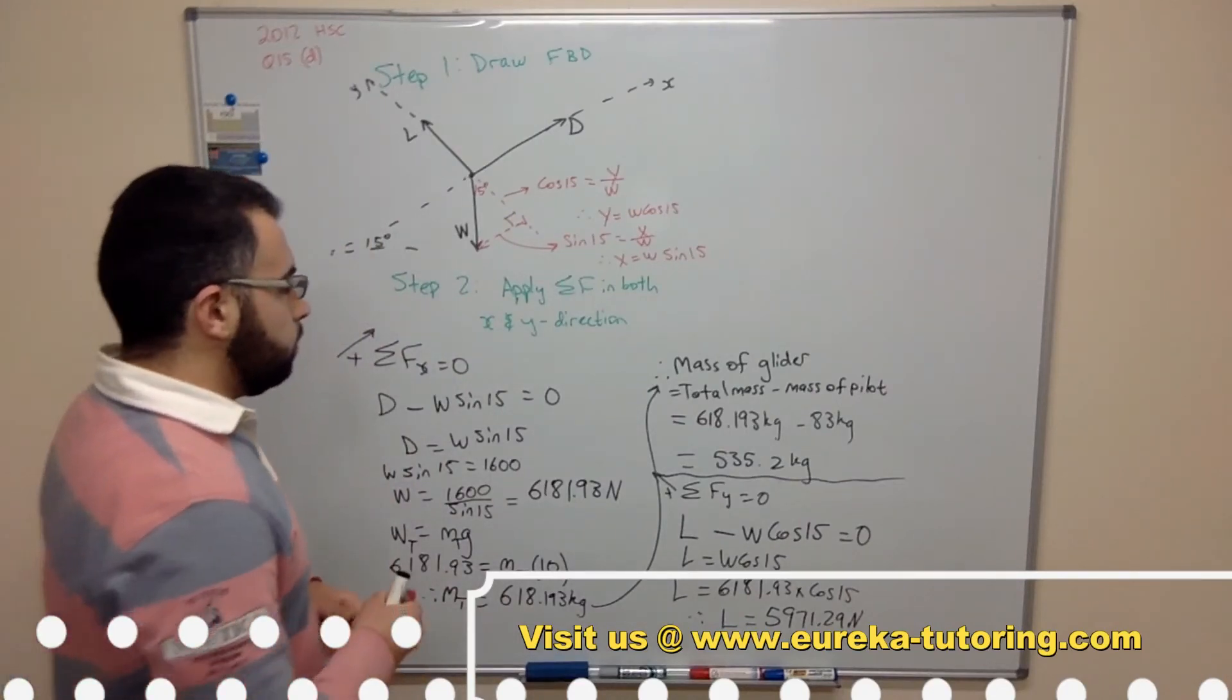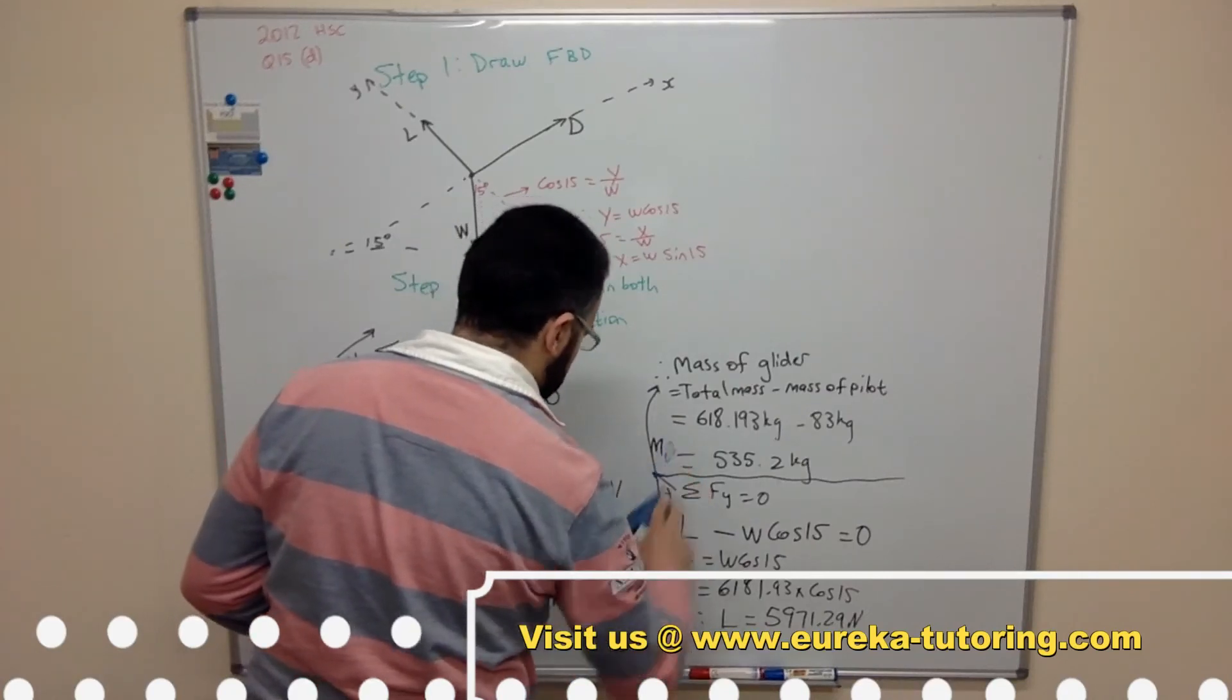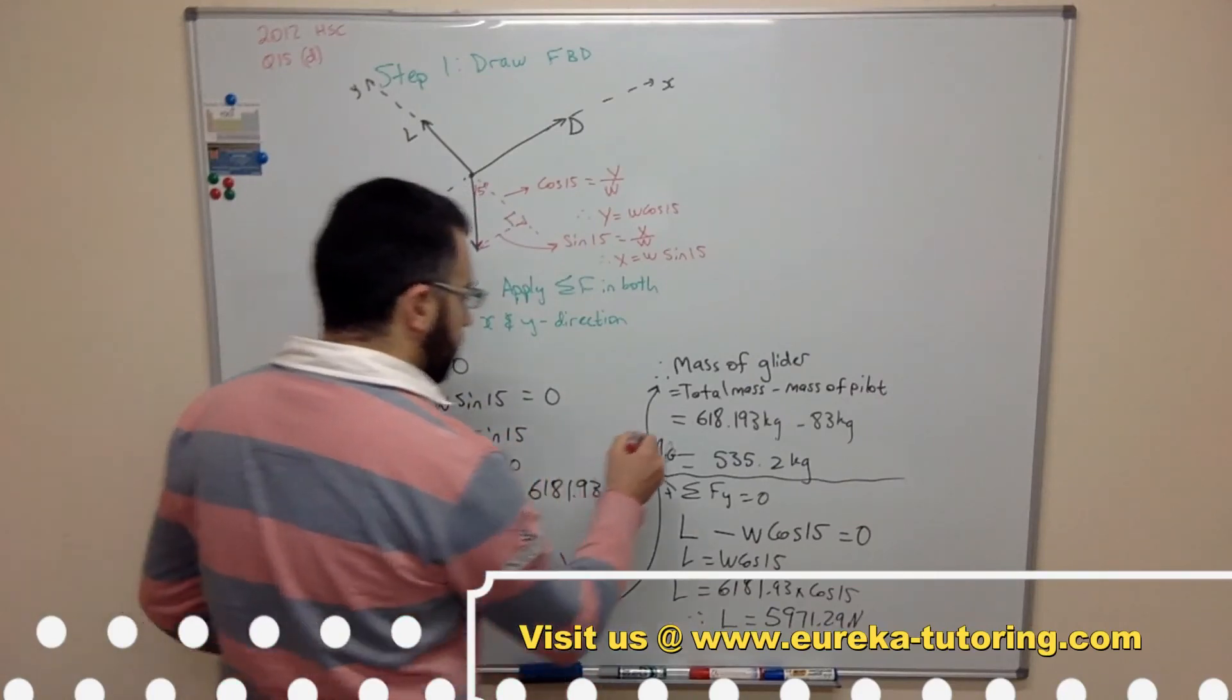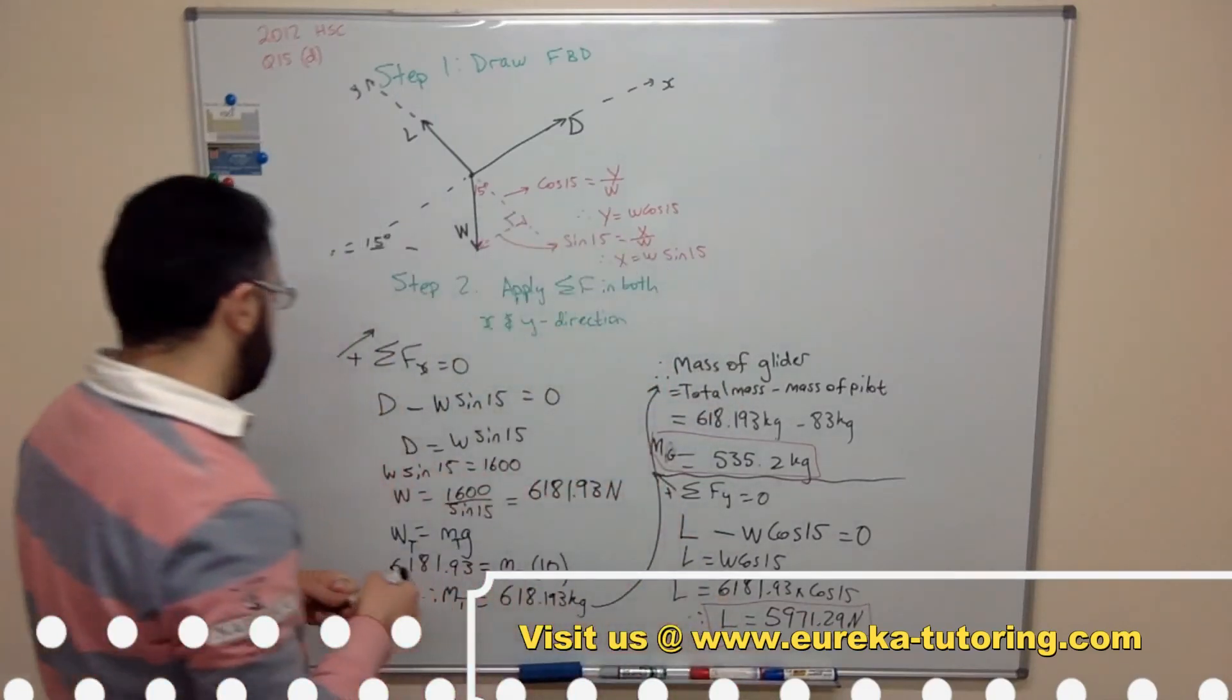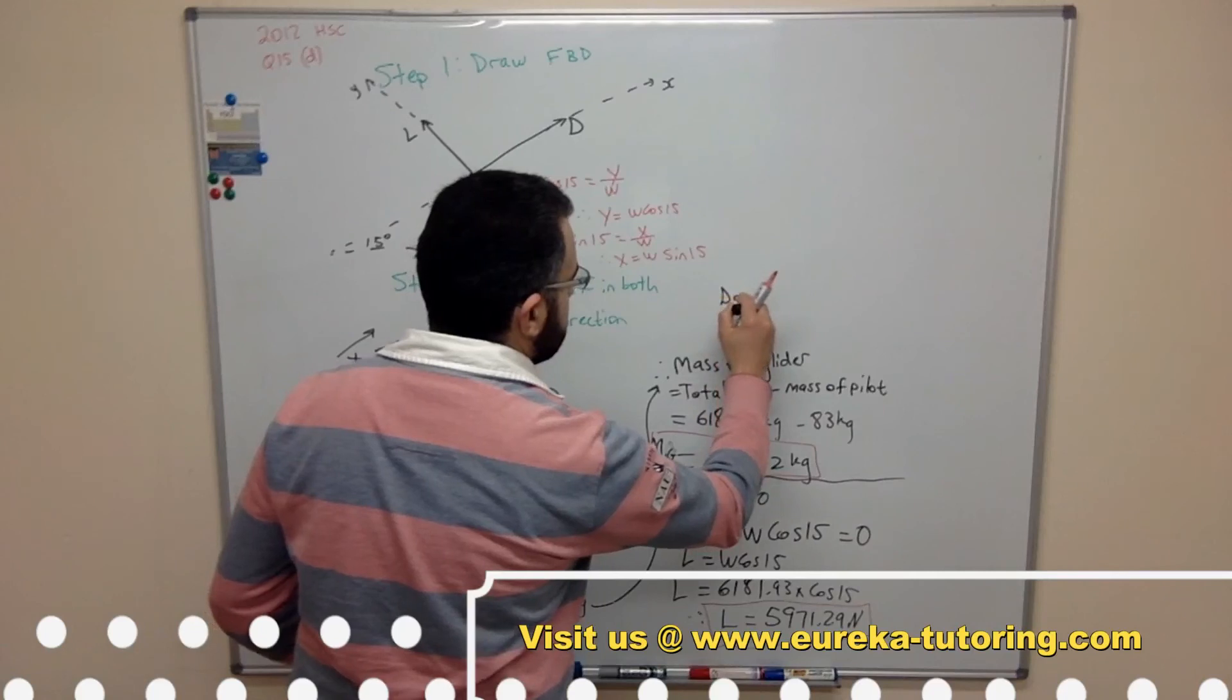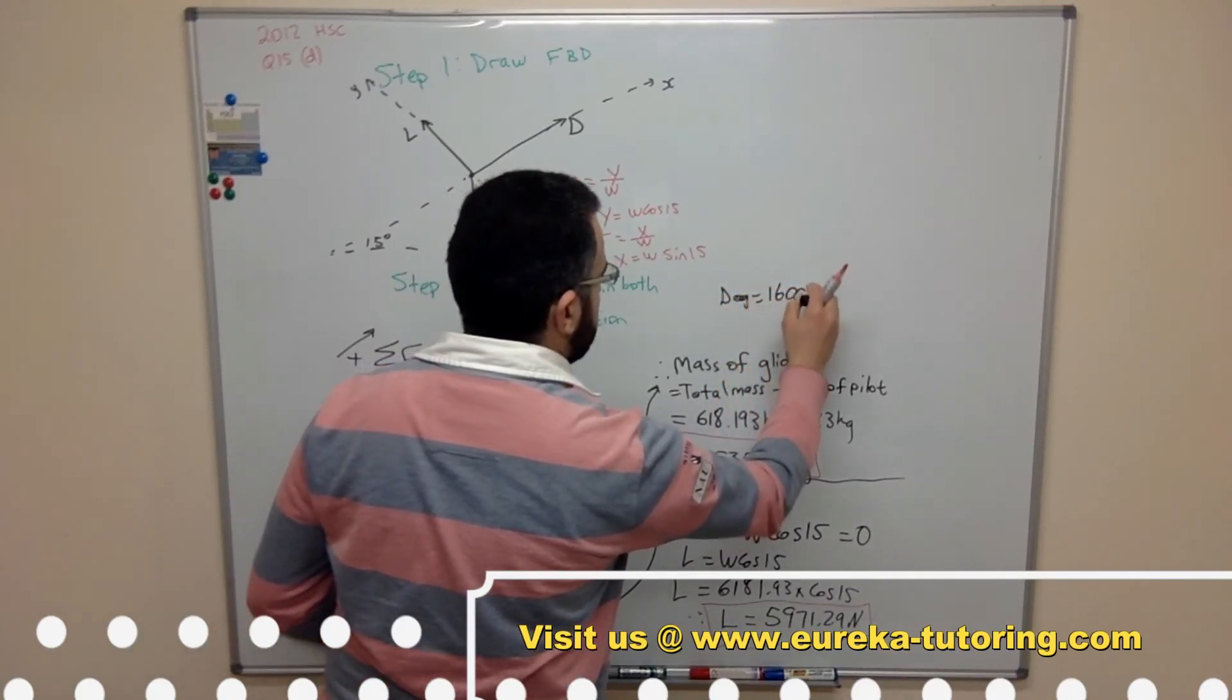So we have our mass of glider. We have our lift. And we know that drag equals 1600 newtons.